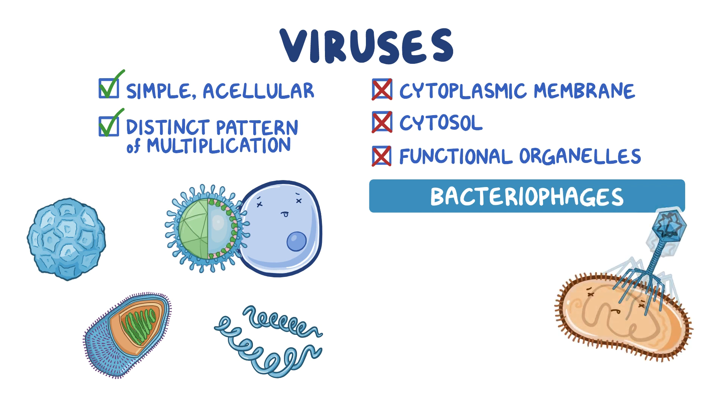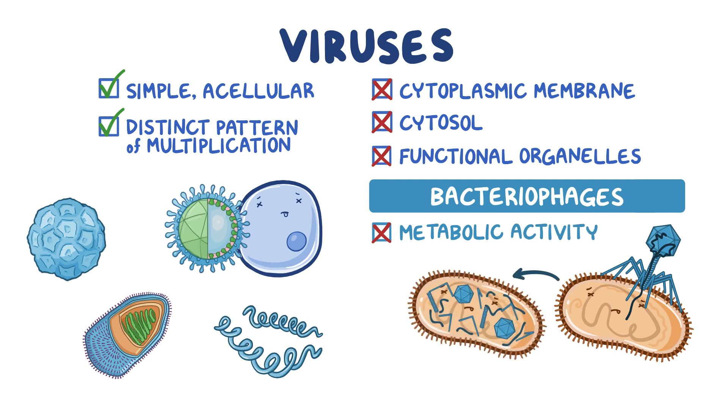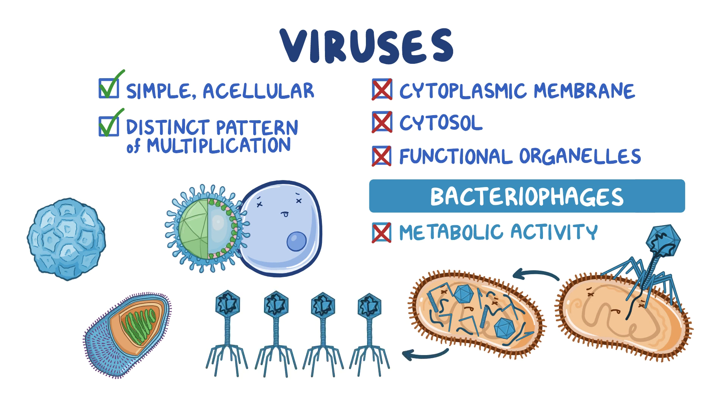Viruses and bacteriophages are not capable of metabolic activity on their own. Instead, they invade other cells and use their metabolic machinery to produce more viral molecules, nucleic acid, and proteins, which then assemble into new viruses.